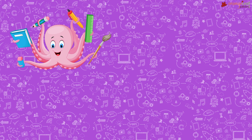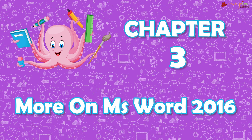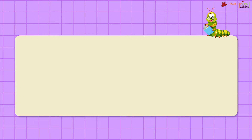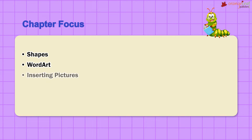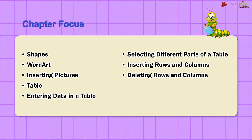Hello children, let's get into the subject: Chapter 3 — More on MS Word 2016. Let's quickly see what we are going to focus on in this chapter: shapes, Word Art, inserting pictures, tables, entering data in a table, selecting different parts of a table, inserting rows and columns, deleting rows and columns, and merging and splitting cells.